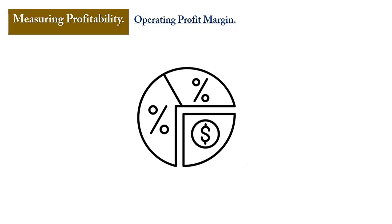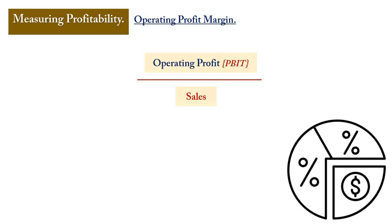The next margin is the operating profit margin. The formula is: operating profit — otherwise known as profit before interest and tax (PBIT) — divided by sales or revenue. Apart from production costs, there are other expenditures the business incurs on its operating journey. After obtaining gross profit, you need to assess whether it fairly covers those other expenditures — there is no point having a higher gross profit if other expenditures run the business into a loss.